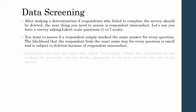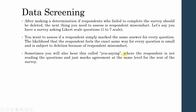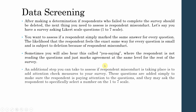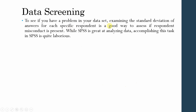Sometimes you will also hear of 'yea-saying,' where the respondent is not reading the questions and just marking the answers. An additional step to assess if respondent misconduct is taking place is to add attention-check measures to your survey. These questions are added to make sure the respondent is paying attention, and they may ask the respondent to specifically select a certain number on a one-to-seven scale. You may also add reverse questions to your questionnaire to help assess respondent misconduct and keep a check on the respondent.